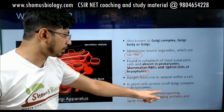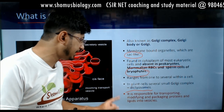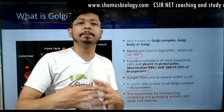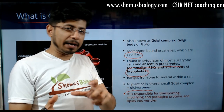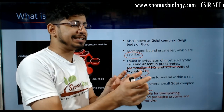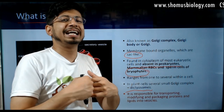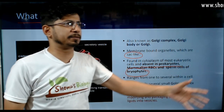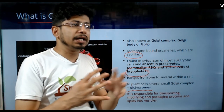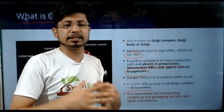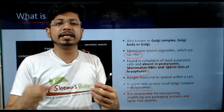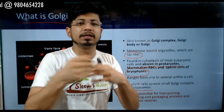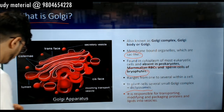Golgi apparatus is responsible for transporting, modifying, and packaging proteins into vesicles. Once proteins and lipids are synthesized in the cell, they are packaged, labeled, modified, and destined to be delivered to different locations. Like a post office, once letters and cargos are present, they are tagged with different addresses and dispatched to their distant locations.